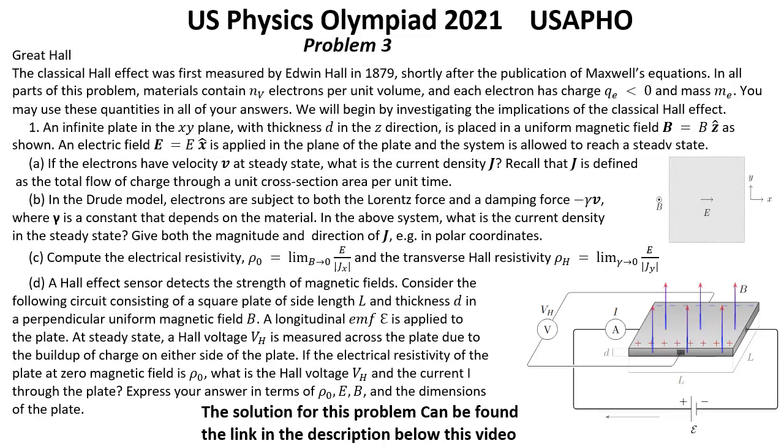If the electrical resistivity of the plate at zero magnetic field is rho 0, what is the Hall voltage Vh and the current I through the plate? Express your answer in terms of rho 0, E, B, and the dimensions of the plate.